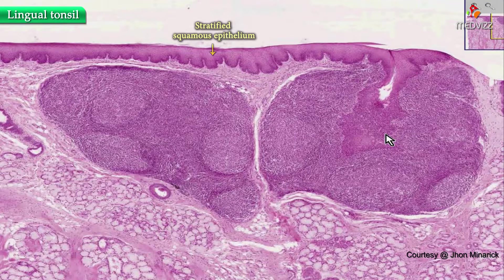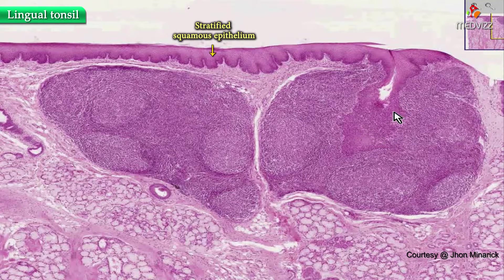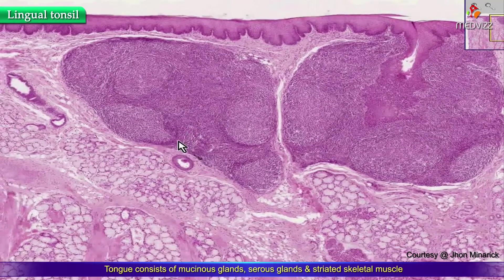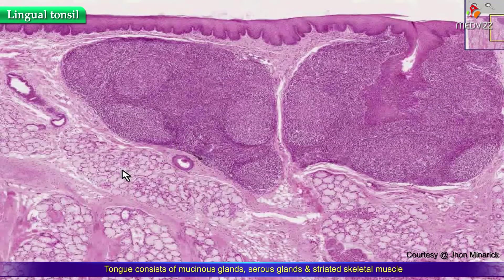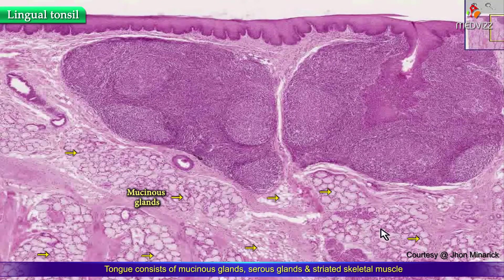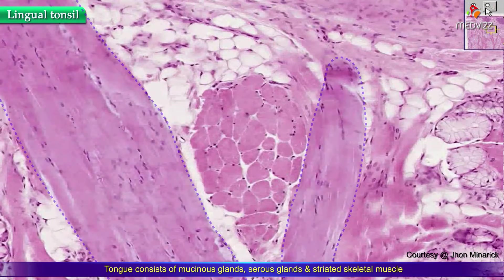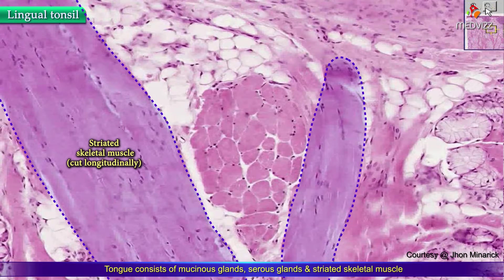We know it's not a pharyngeal tonsil because the overlying epithelium is squamous rather than pseudostratified ciliated columnar. And we know it's not a palatine tonsil because it is surrounded by numerous mucinous and serous glands as well as large bands of classical striated skeletal muscle.